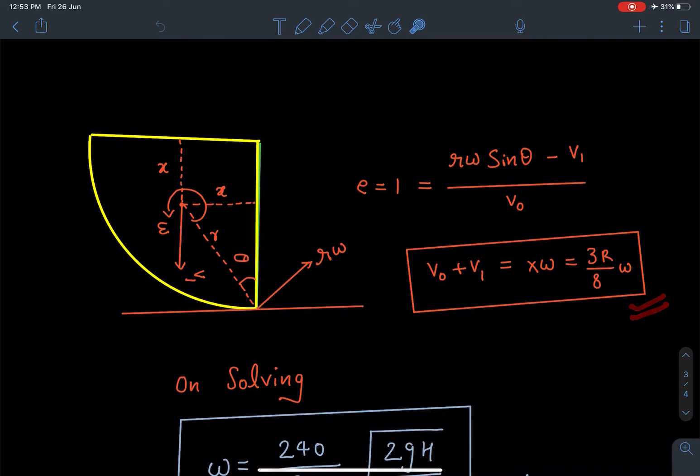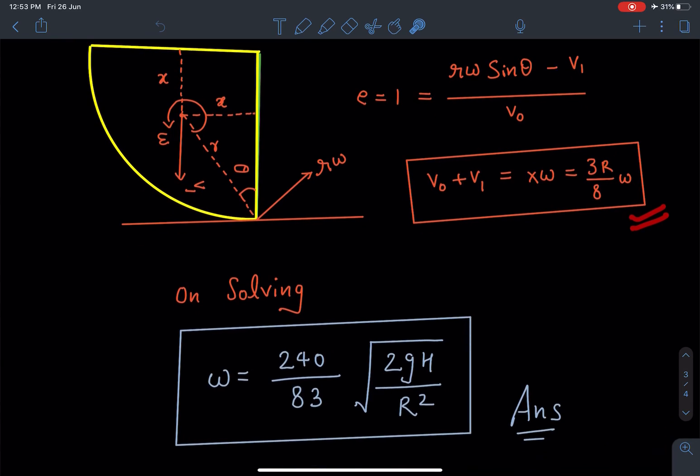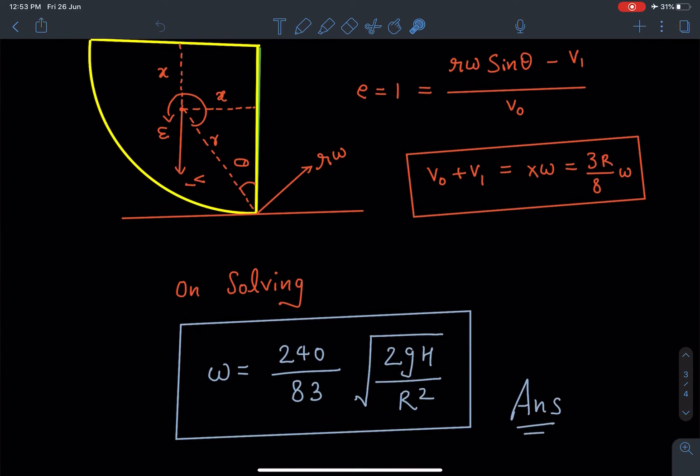Now we have three equations and three unknowns. When we solve it, we'll be obtaining this answer which is ω = (240/83)×√(2gh/R²). This is going to be the answer of this problem.